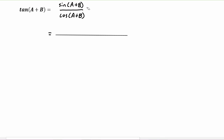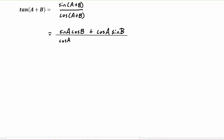Sine of a plus b we know is sine a cosine b plus cosine a sine b. And in the denominator, cosine of a plus b gets replaced with cosine a cosine b minus sine a sine b.